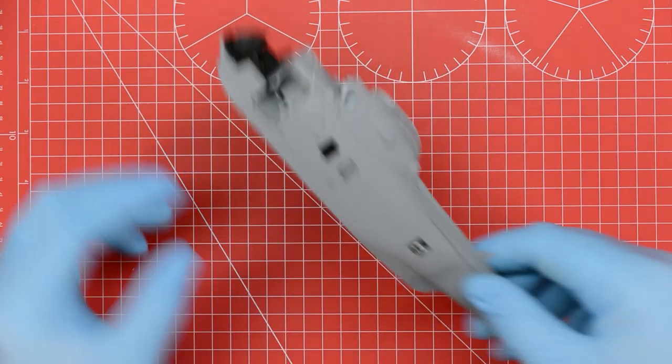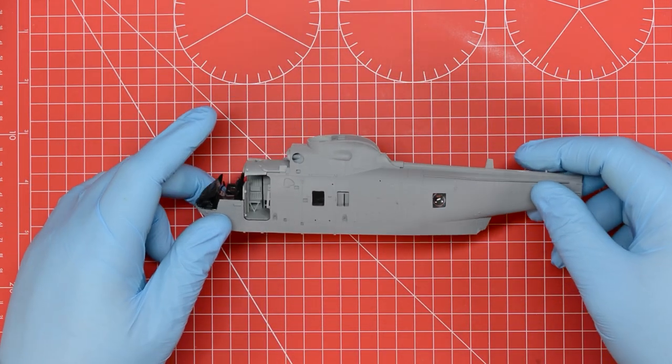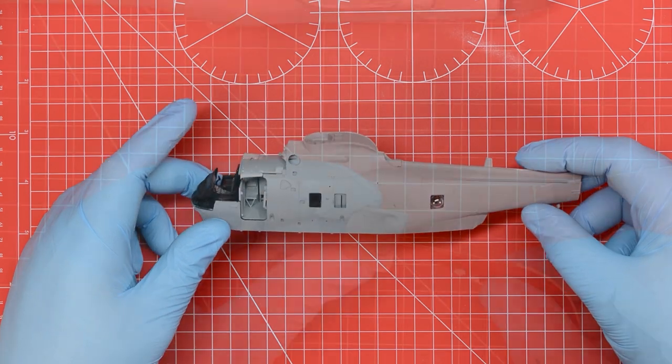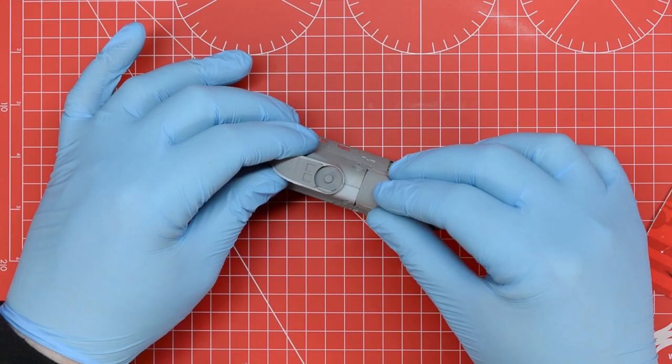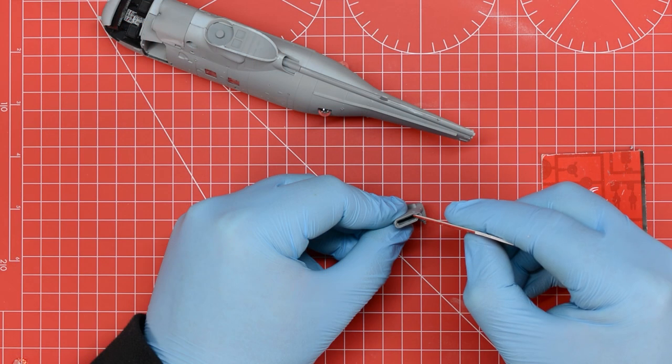With the fuselage assembled the next few steps in the instructions are simply a case of adding more detailed parts to the model. To do this we repeated the same removal, clean up and gluing process that we showed at the start of the video.